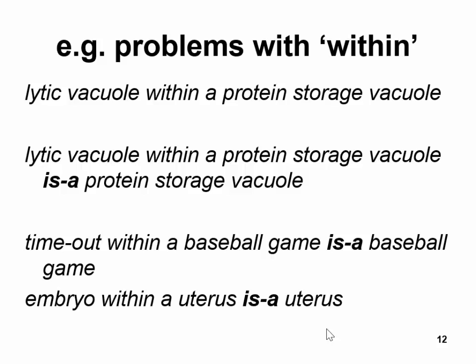Examples from the gene ontology as it then was: "lytic vacuole within a protein storage vacuole is a protein storage vacuole." This is like saying a time out within a baseball game is a baseball game — it's wrong. Or an embryo within a uterus is a uterus — also wrong. The gene ontology made mistakes like this because they were not thinking clearly about the principles which define how ISA is to be used. BFO is designed to capture those principles.